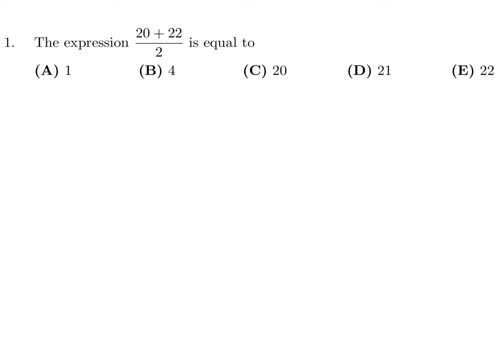The expression 20 plus 22 over 2 is equal to... Well, 20 plus 22 over 2, that's 42 over 2, which is 21. Therefore, that's D.